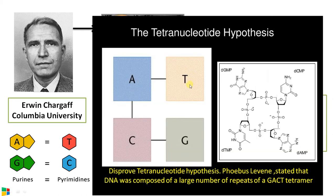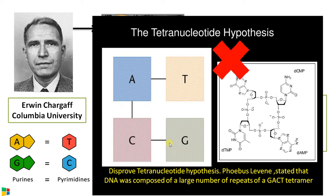The third point is that the tetranucleotide hypothesis proposed by Phoebus Levene was disproved by Chargaff's experiments. Phoebus Levene, who discovered the composition of nucleotides — that is, sugar, phosphate, and nitrogenous bases — proposed a tetranucleotide hypothesis that DNA was composed of repeated units of a GACT tetramer. This was disproved by Chargaff's rule.